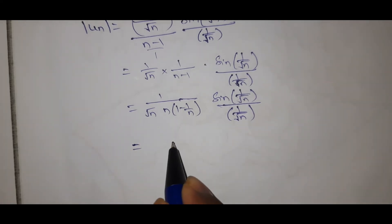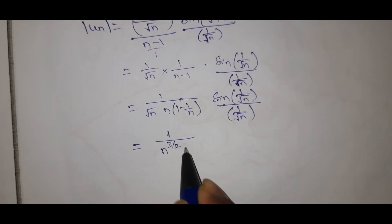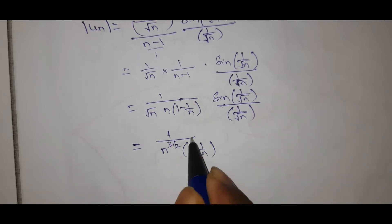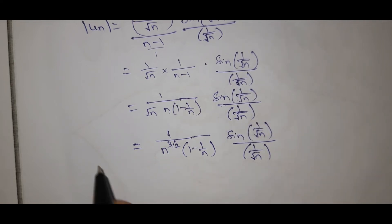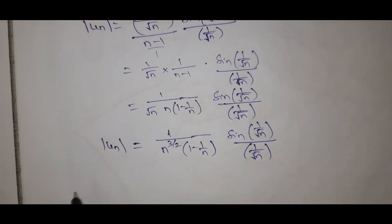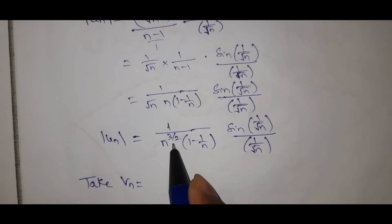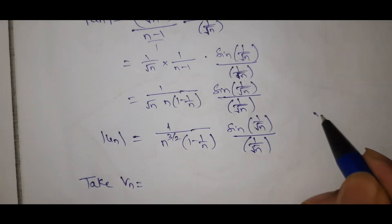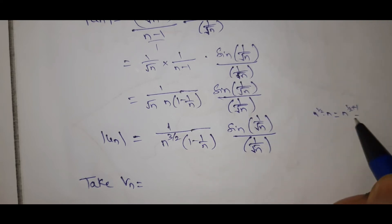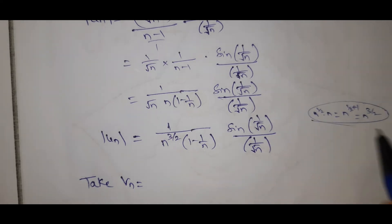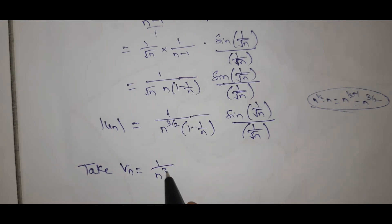So |u_n| simplifies to [sin(1/√n) / (1/√n)] · 1/(n^(3/2) · (1 - 1/n)). The denominator gives us n^(1/2) · n = n^(3/2). We take v_n = 1/n^(3/2). So |u_n| / v_n = [sin(1/√n) / (1/√n)] · 1/(1 - 1/n).